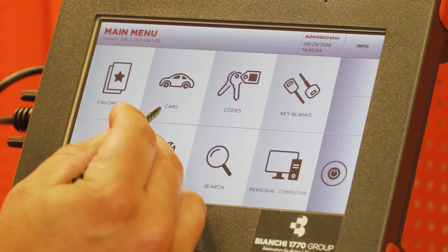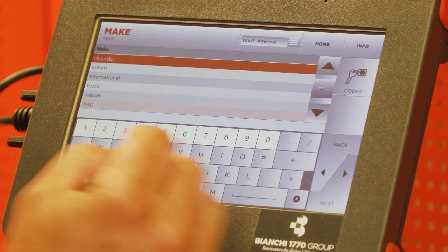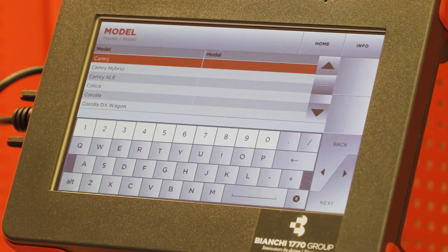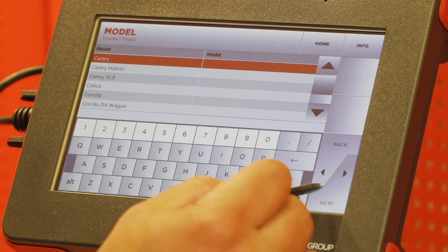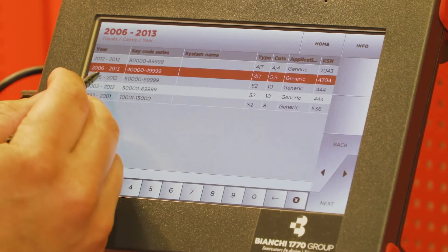From the main menu, select Cars, Toyota, select Camry, and your year range.